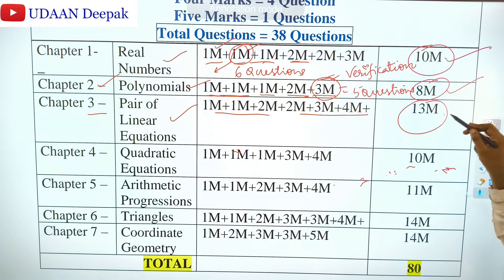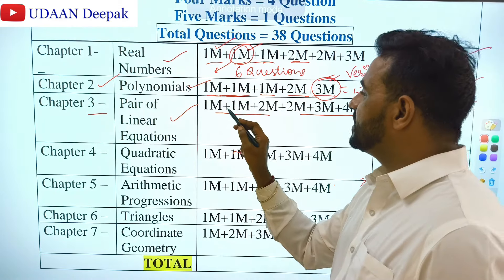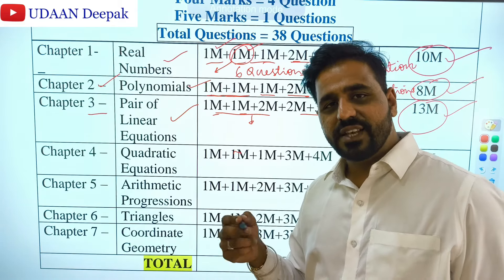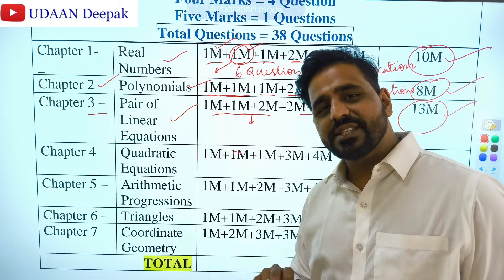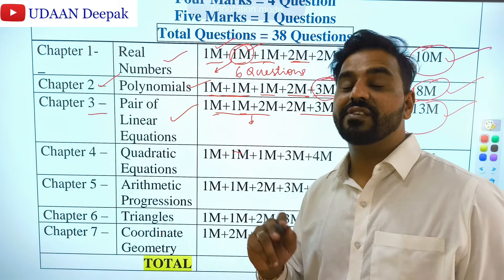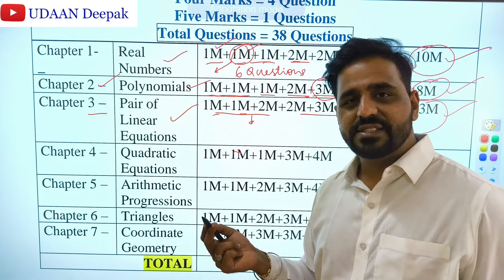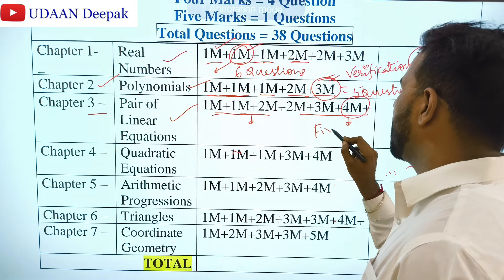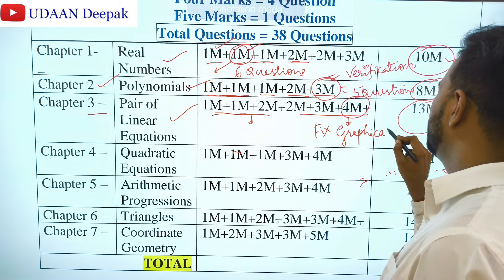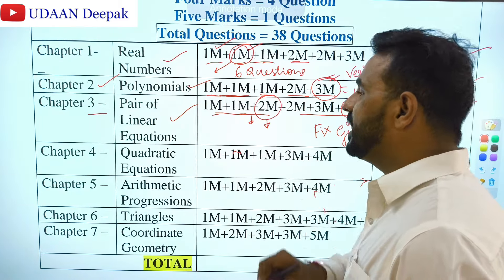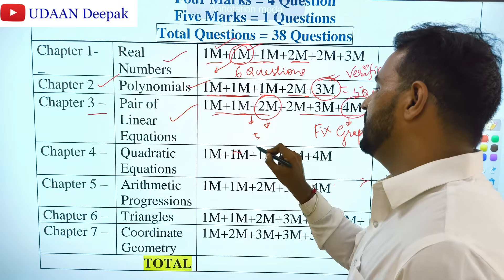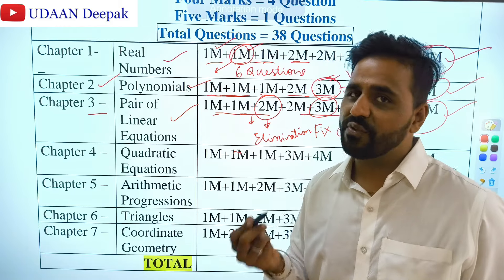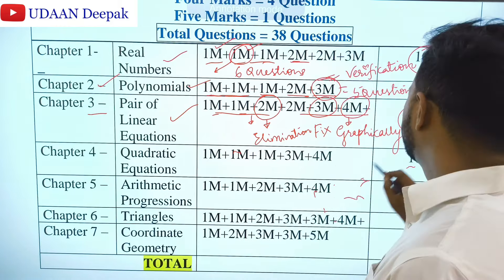Chapter 3 — Pair of Linear Equations — you can expect 6 questions for a total of 13 marks. For 1-mark and 2-mark questions, know the rules of consistency: when lines are parallel, intersecting, or coincident, and when the system is consistent or inconsistent. A graph question — solve graphically — is a fixed 4-mark question. For 2-mark, expect a direct elimination method question. For 3-mark, one verbal problem such as problems on ages or fractions can be expected.